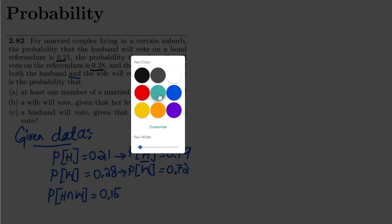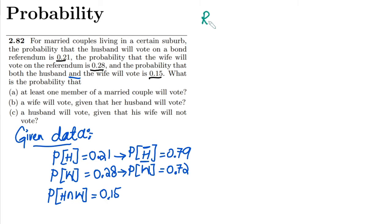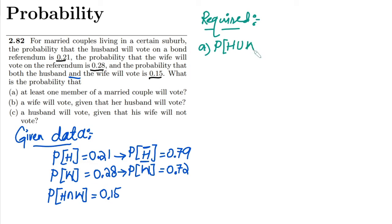Now let me identify the required items. Part A asks for the probability that at least one member of the married couple will vote. 'At least one' means either the husband, or the wife, or both will vote — that is the union case. For Part B, we need to find the probability that the wife will vote given that her husband will also vote.